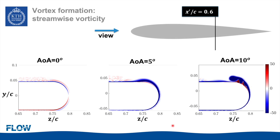Going to the results section, we start by looking at the vortex formation process. Here I'm plotting streamwise vorticity for the three wingtip cases at zero, five, and ten degree angles of attack. The dark blue region indicates counterclockwise rotation while the red region means clockwise rotation. In the ten-degree case, the dark blue region shows the primary vortex core, while the dark red region shows a secondary counter-rotating vortex, along with third and fourth vortices also formed at this location.